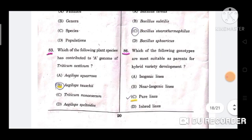Question number 86: Which of the following genotypes are most suitable as parents for hybrid variety development? Option is C, pure lines.